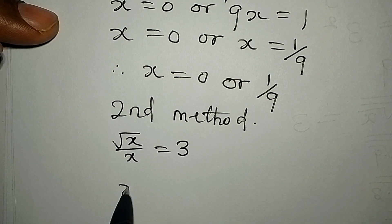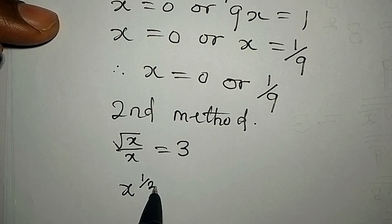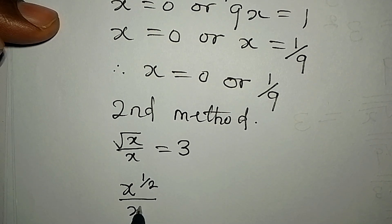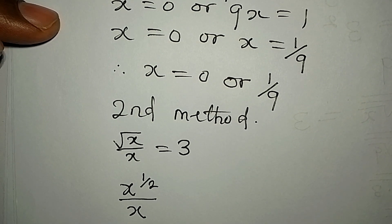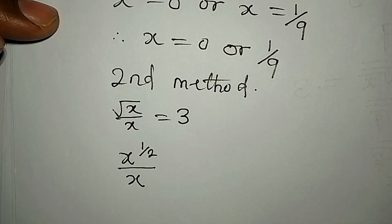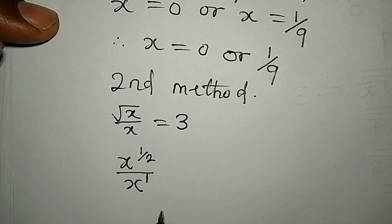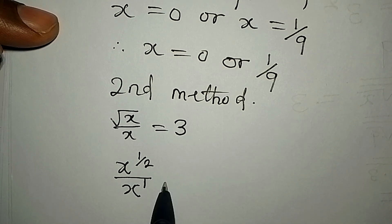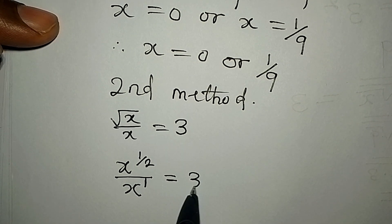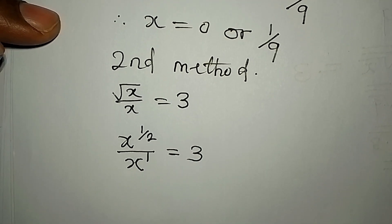You know that square root of x is the same thing as x to the power of one over two. Then we have this over x, and ordinary x is the same thing as x to the power of one. This is equal to 3.